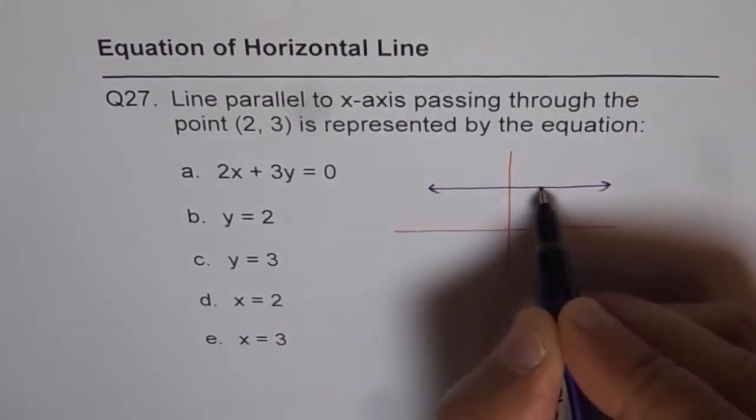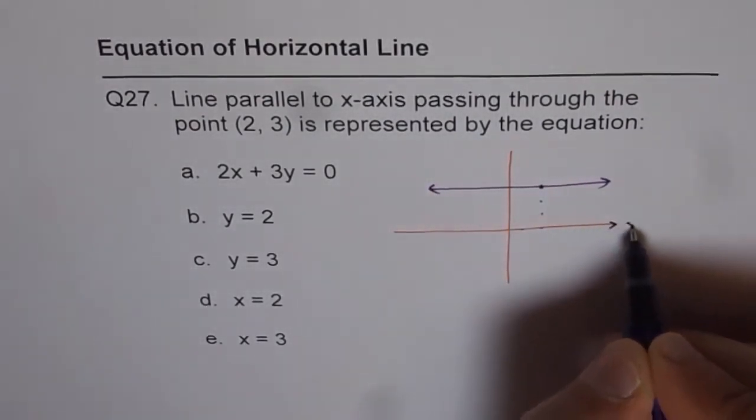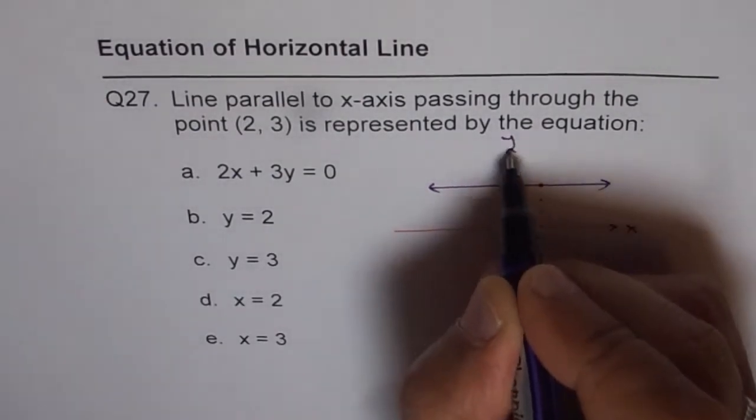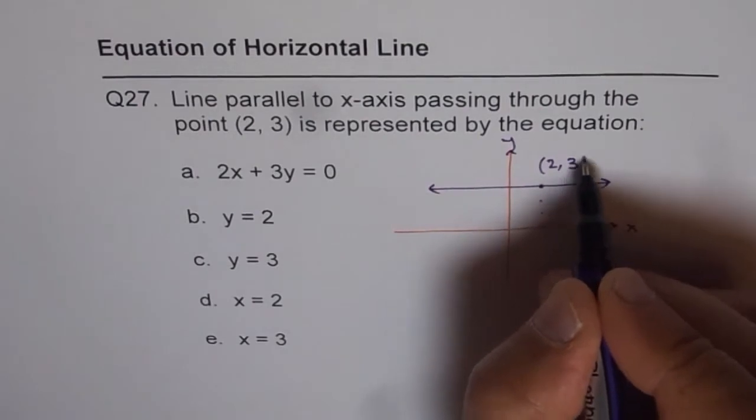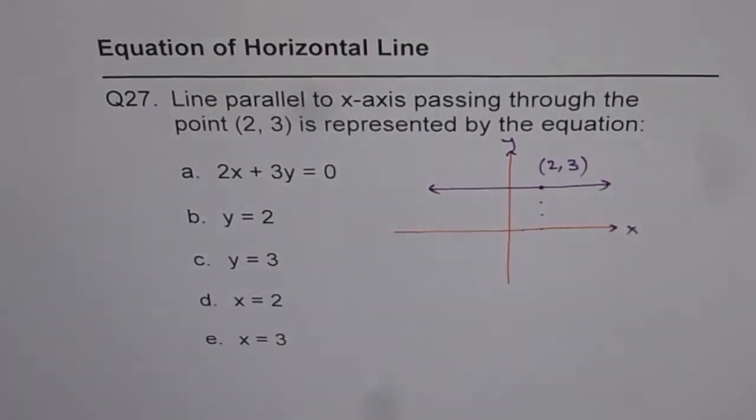So that is a horizontal line which is parallel to x-axis and passes through point (2, 3). So what is the equation of this line?